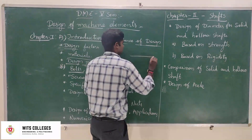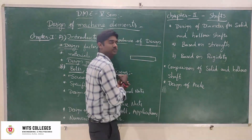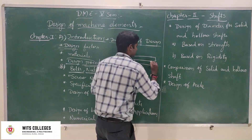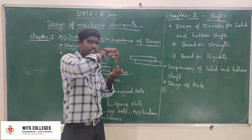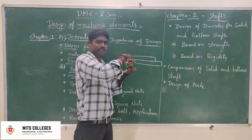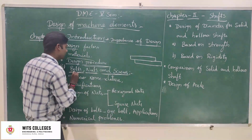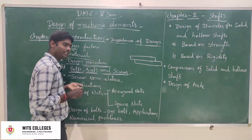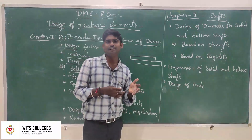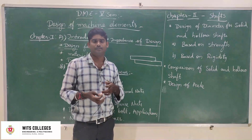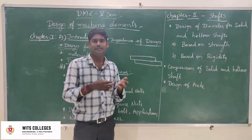This is one plate, and this is another plate. I want to join these two plates — two components. We use bolts, nuts, and screws for another type of joint. Joints are divided into two types: permanent joints and temporary joints.